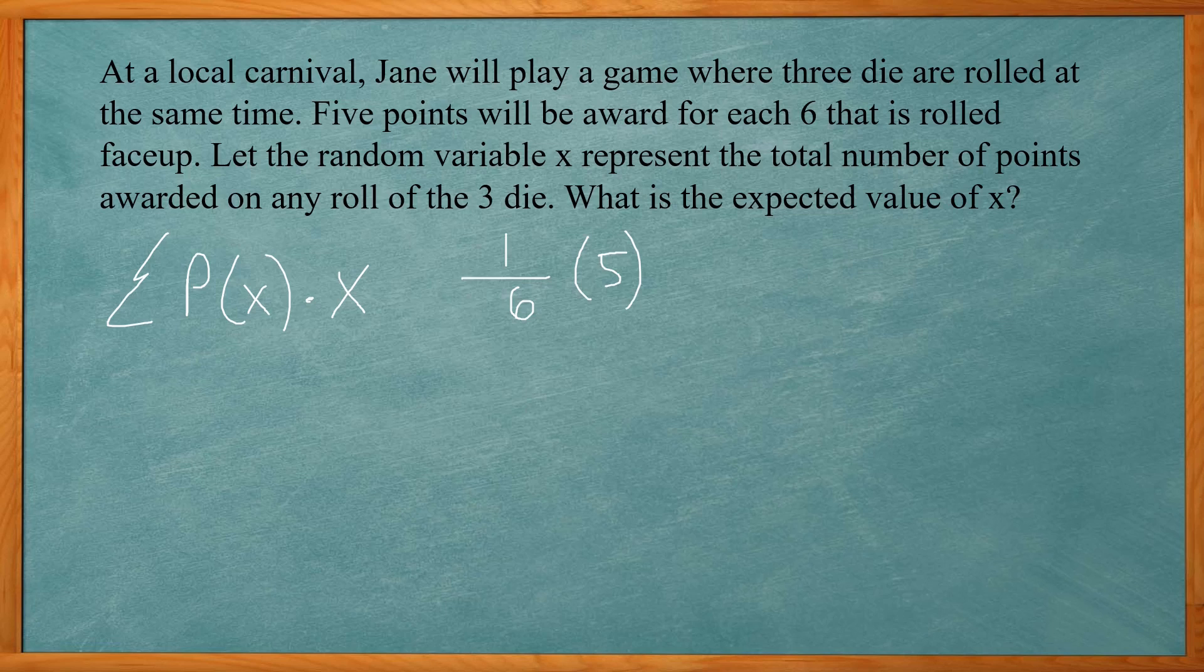Now the probability of not getting a six is five out of six. There's five numbers there that are not a six, and you get zero points for that. They're going to add them - summation means add them together.